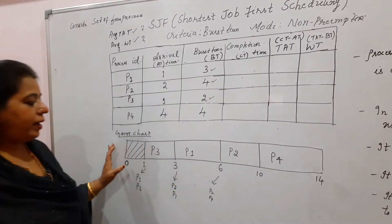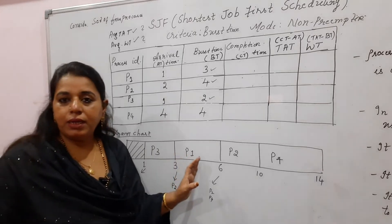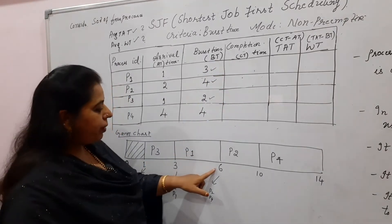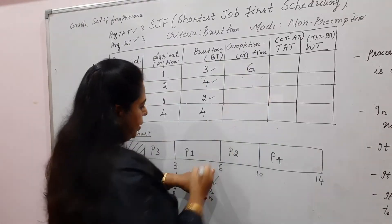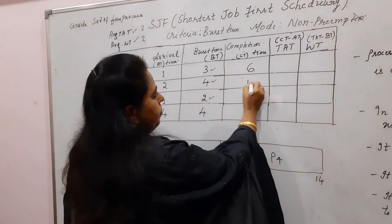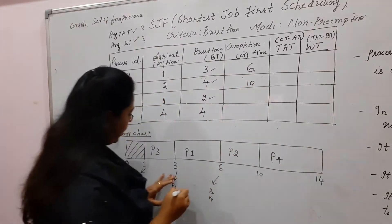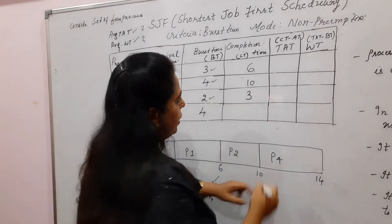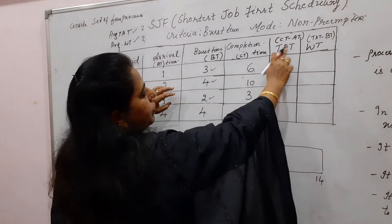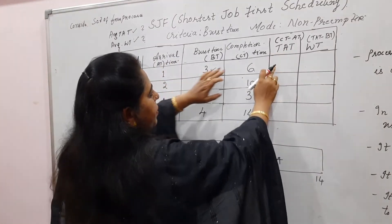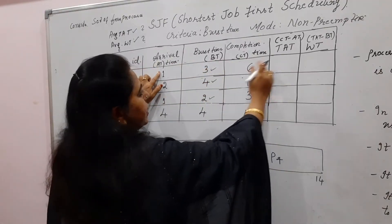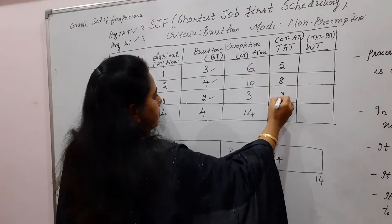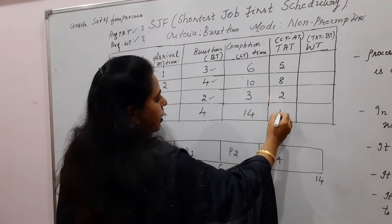This is how we fill the Gantt chart. Now fill in the completion times: P1 = 6, P2 = 10, P3 = 3, P4 = 14. Compute turnaround time (completion time minus arrival time): P1 = 6−1 = 5, P2 = 10−2 = 8, P3 = 3−1 = 2, P4 = 14−4 = 10.